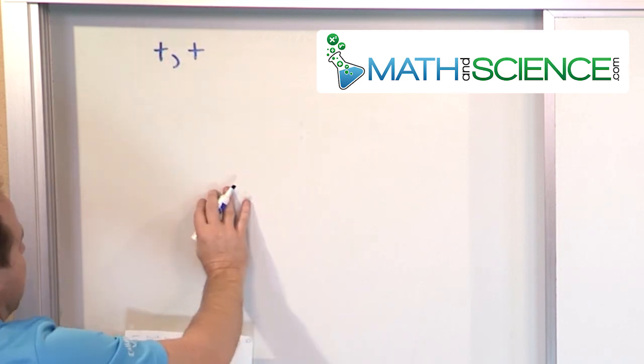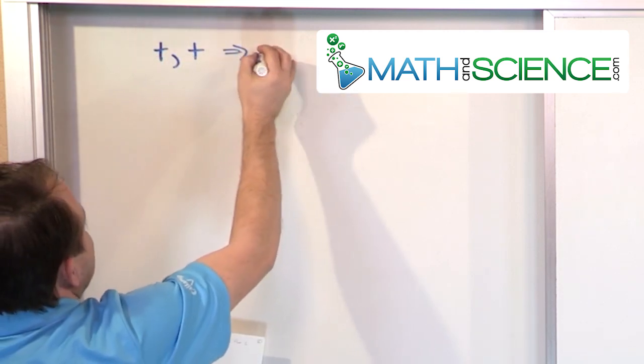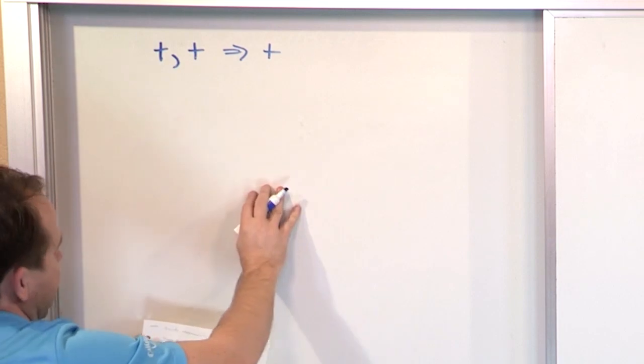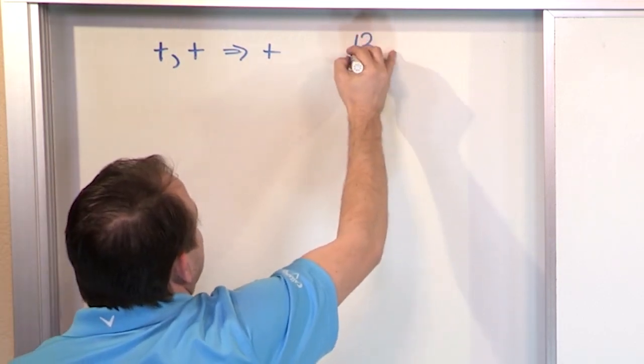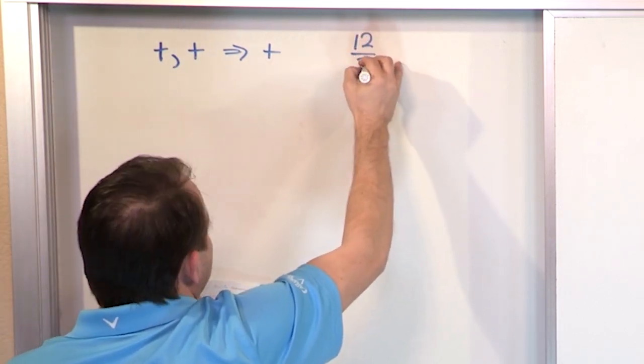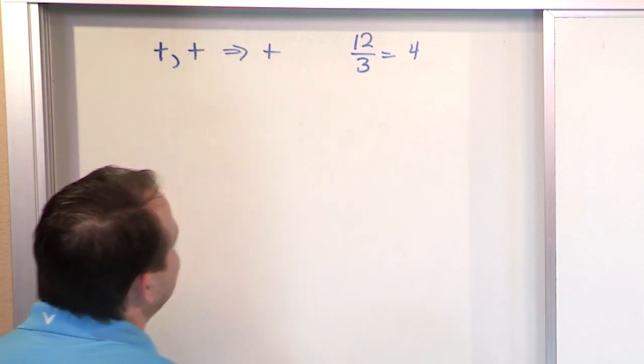If we're dividing a positive number by a positive number, what you're going to get is always a positive number. So for instance, a positive 12 divided by a positive 3 gives you a positive 4. You all know that, right?